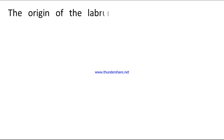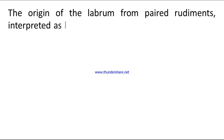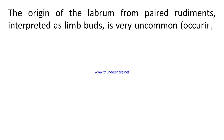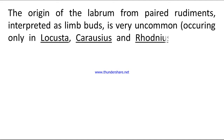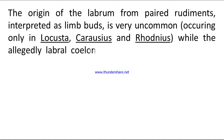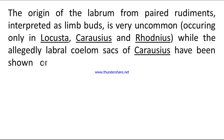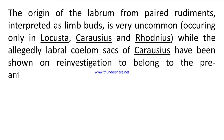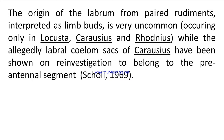The origin of the labrum from paired rudiments, interpreted as limb buds, is very uncommon, occurring only in Locusta, Carausius, and Rhodnius. The early labral coelom sacs of Carausius have been shown on re-investigation to belong to the pre-antennal segment — Scor, 1969.